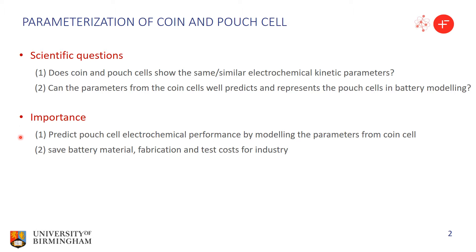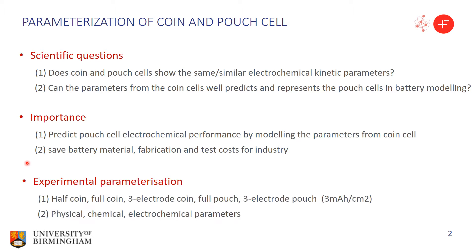If the answer is yes, there are two benefits. First, we could predict pouch cell yield per month by modeling the parameters from the coin cell. In this way, we can save cost on battery materials, fabrication, and tests. For the experimental parameterization, we designed different types of cells: half-coin, full-coin, three-electrode-coin, full-pouch, and three-electrode-pouch cells, on three milliamps per centimeter square electrodes. The parameters cover physical, chemical, and electrochemical parameters.